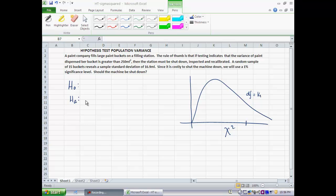A pretty expensive process. Now, on a particular day, a random sample of 15 buckets reveals a sample standard deviation of 6.9 milliliters. Since it's costly to shut the machine down, we will use a 1% significance level. Should the machine be shut down?